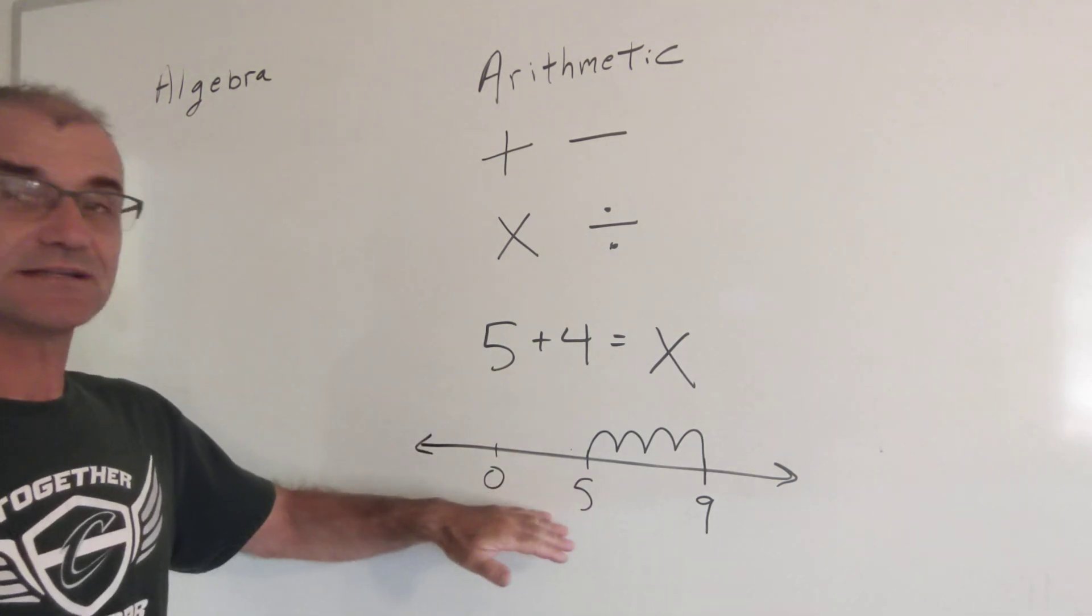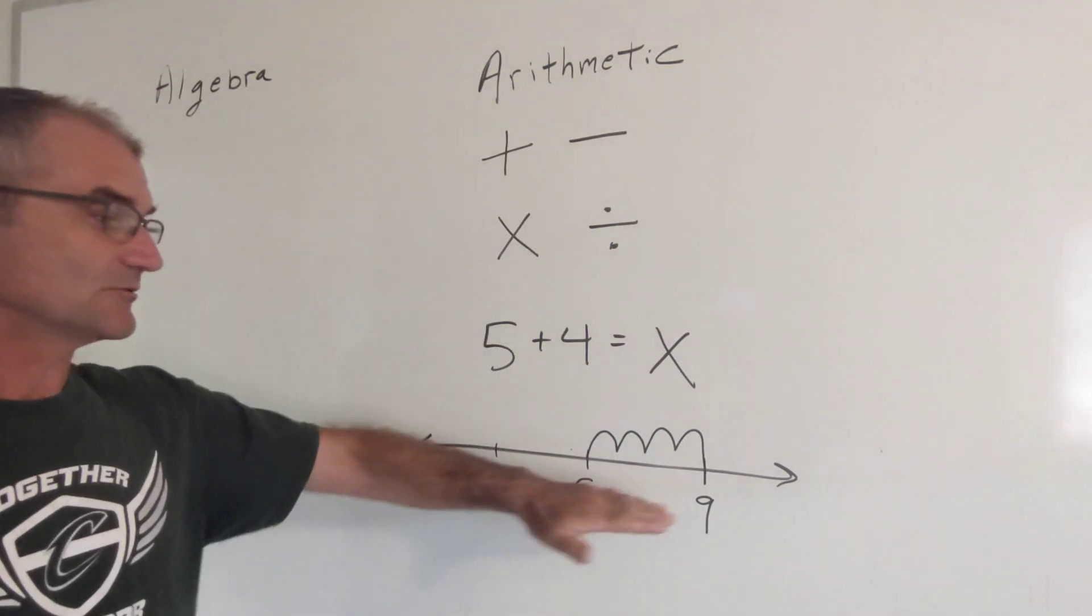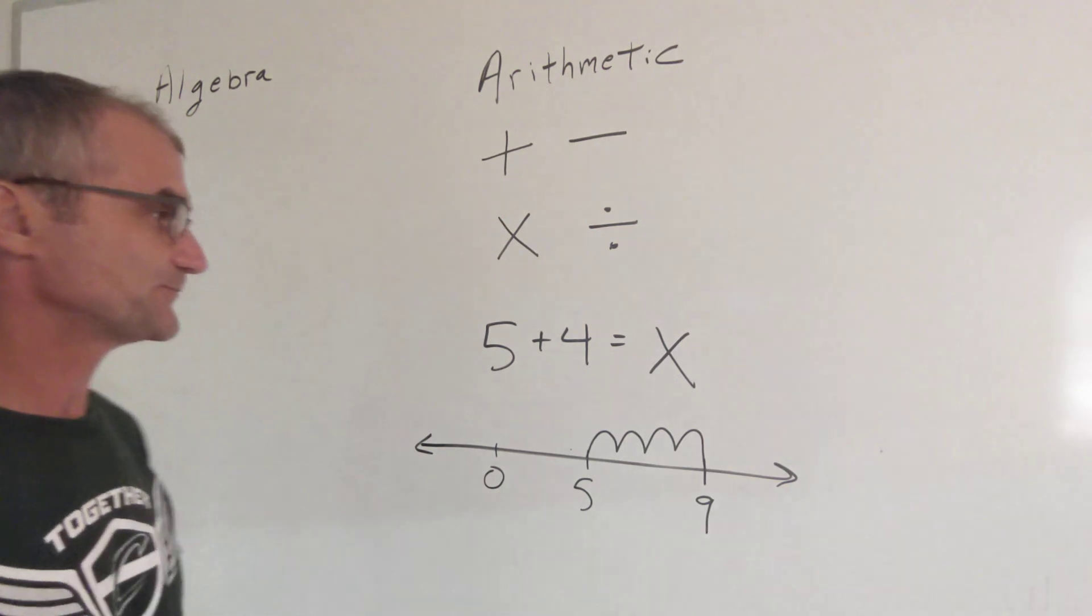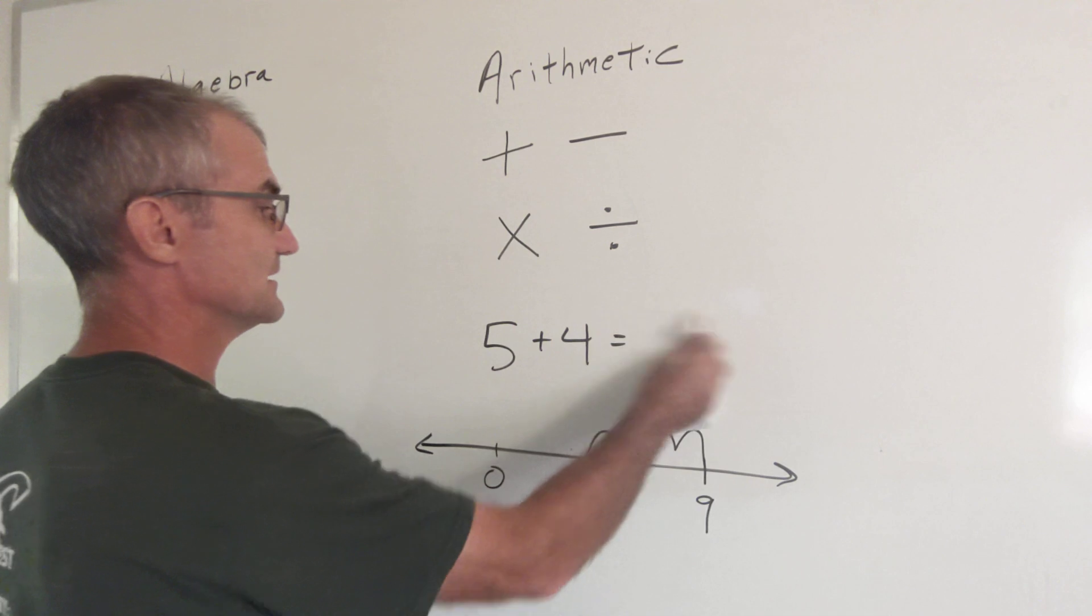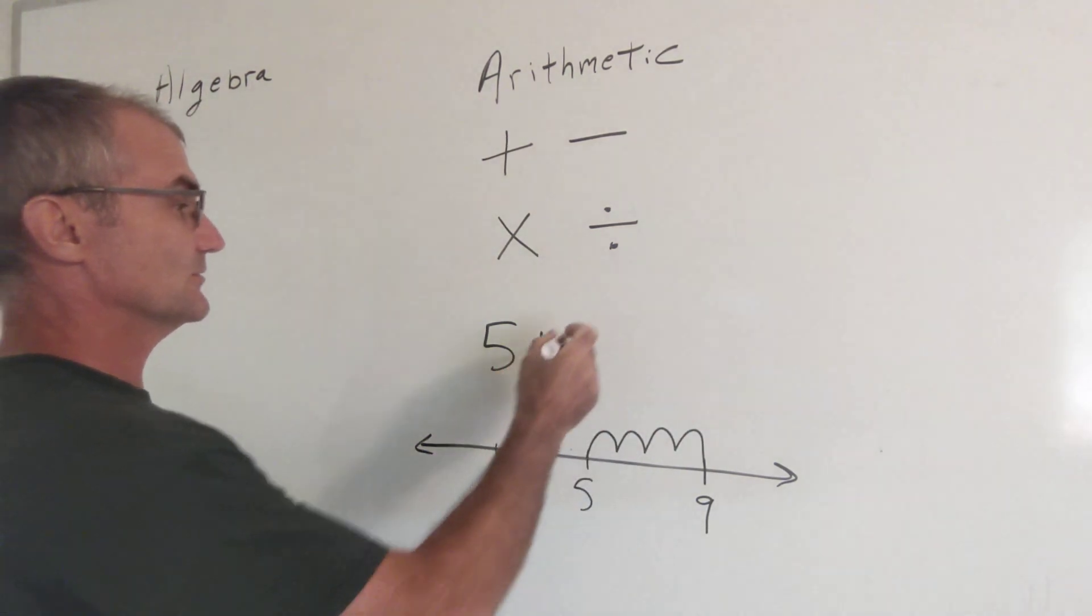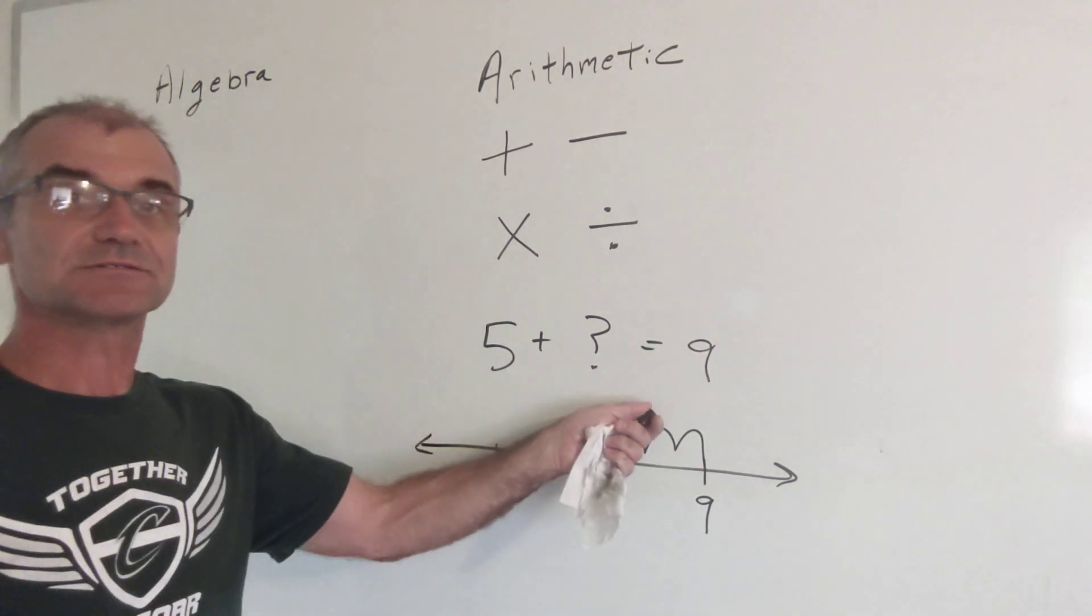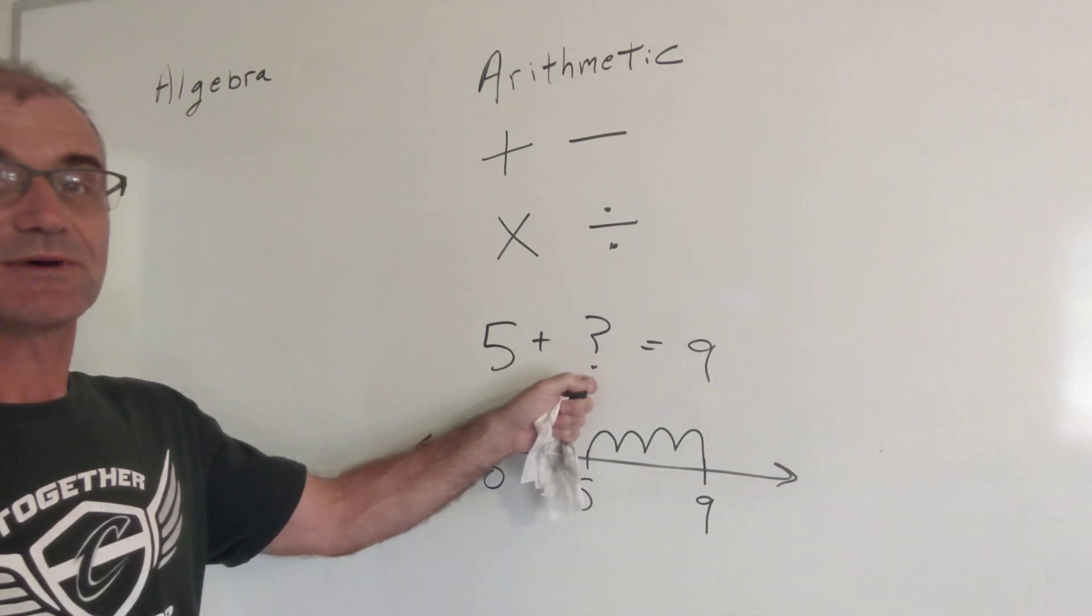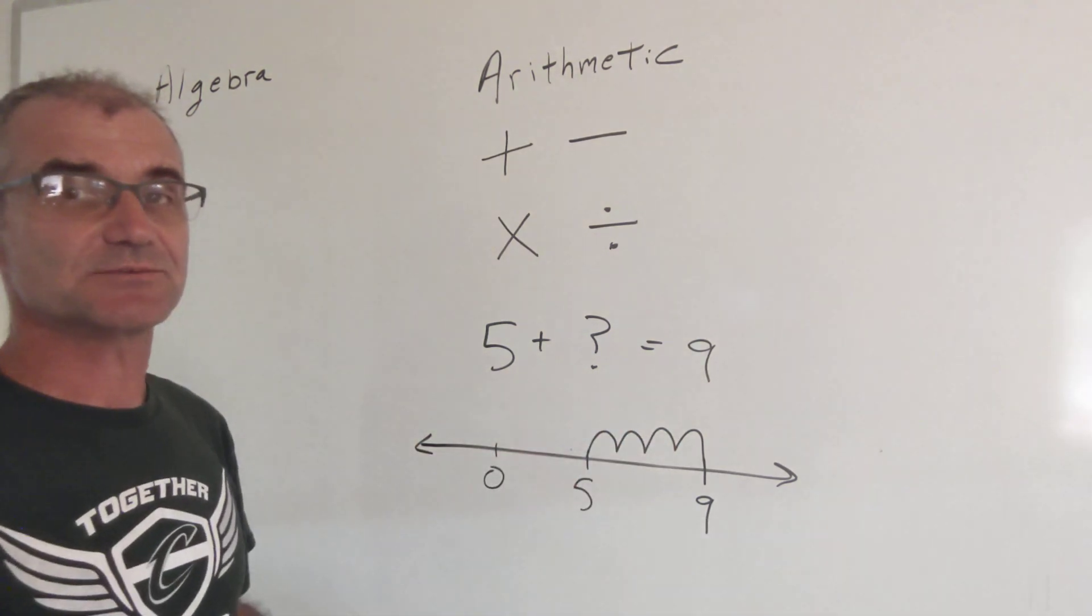This idea on the number line is still significant, and then eventually we're going to move to two-dimensional space where the number line is x and the vertical number line crossing it is y. So let's say instead of having 5 plus 4 equals x, I have 5 plus what is equal to 9.